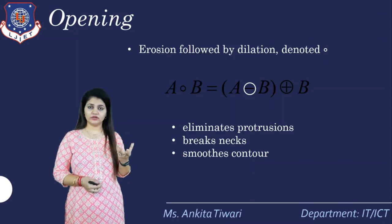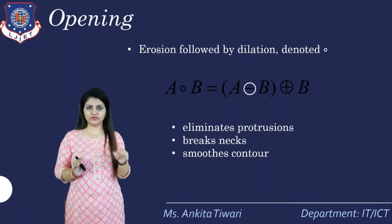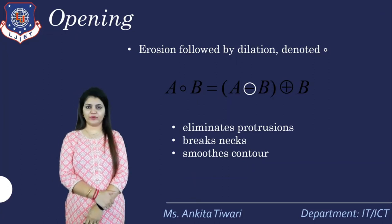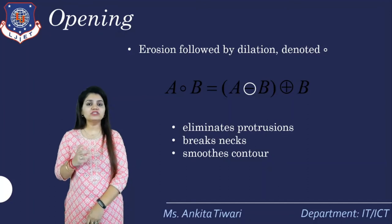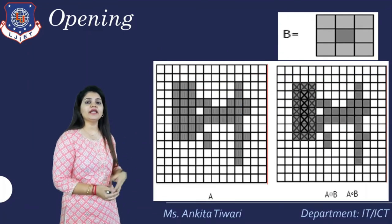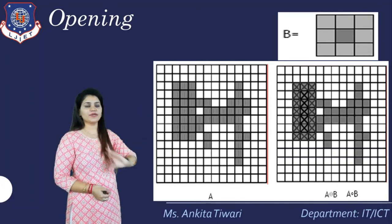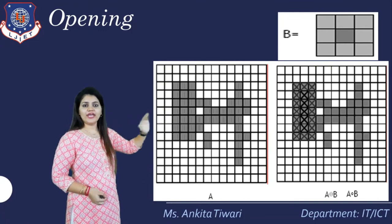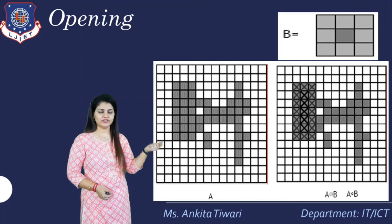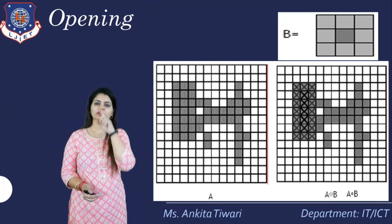The formula for opening is: A ∘ B = (A eroded by B) dilated by B — that is, erosion followed by dilation. This eliminates rotations, breaks, and smooths the contour. In the diagram, B is the structuring element and A is the image. First erosion is applied (A eroded by B), then dilation is applied to the result, producing the opened image shown with the crop form.